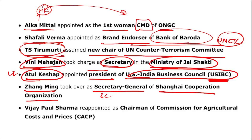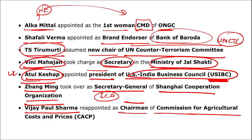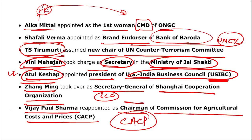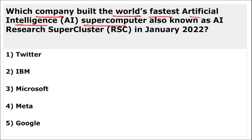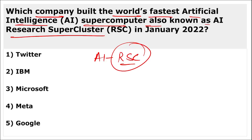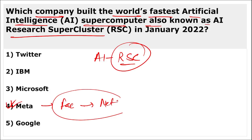Zhang Ming took over as Secretary General of the Shanghai Cooperation Organisation (SCO). Vijay Paul Sharma was reappointed as Chairman of CACP (Commission for Agriculture Costs and Prices). City Union Bank launched an easy pay debit card in a fitness watch. Meta (formerly Facebook) built the world's fastest AI supercomputer, also known as the AI Research Super Cluster (RSC).